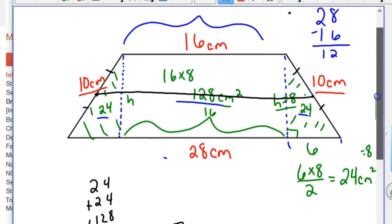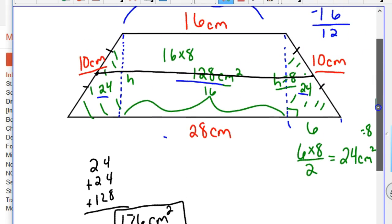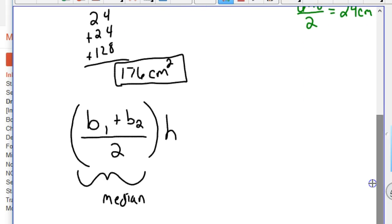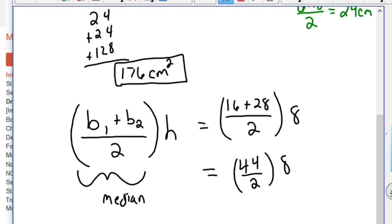But anyway, let's go ahead and plug it in. We should come up with the same thing. So my two bases are 16 and 28, and my height is 8. So in this case, it would be 16 plus 28 divided by 2 times 8. And it should come out to 176. So 16 plus 28 is 44, divided by 2. And then we're going to take that times 8. So that's 22, because 44 divided by 2 is obviously 22, times 8.